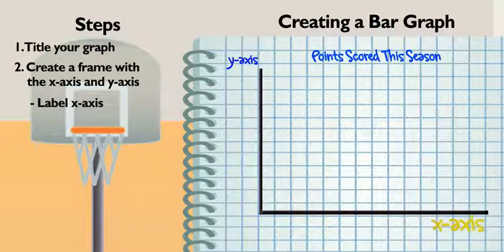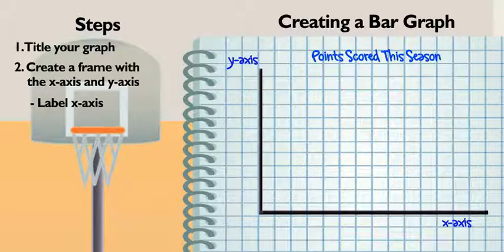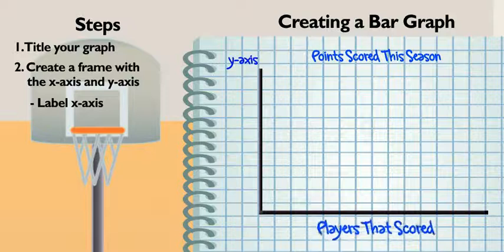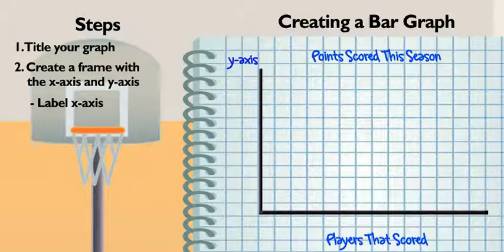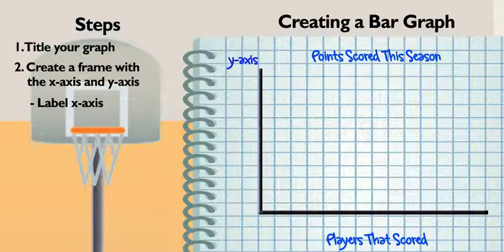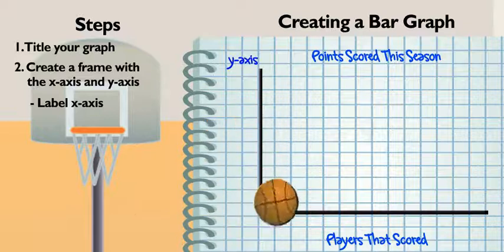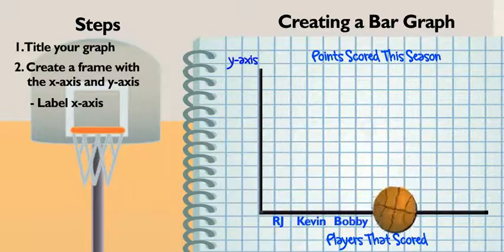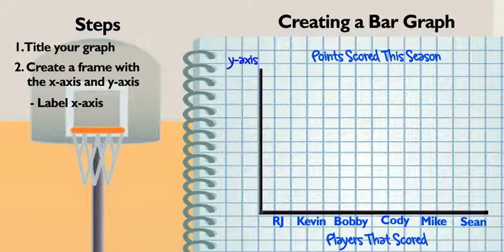Now let's title and label your X axis. You'll compare the different players here, so title the whole X axis, Players That Scored. Then, write each name down below. I put all their names along the X axis? Yep. Looks like RJ, Kevin, Bobby, Cody, Mike, and Sean. And done.